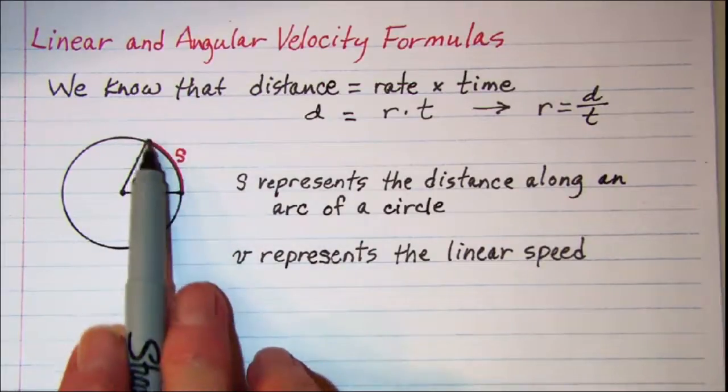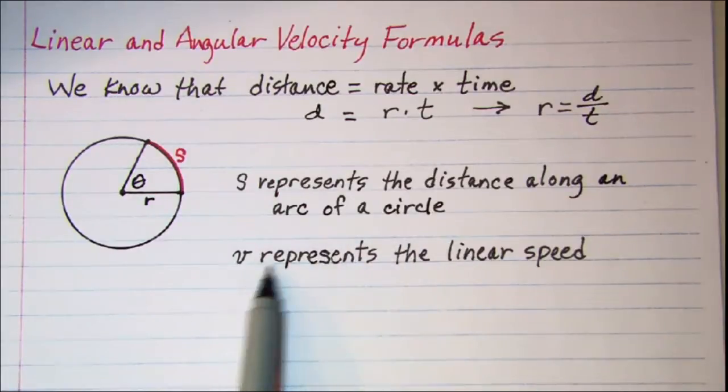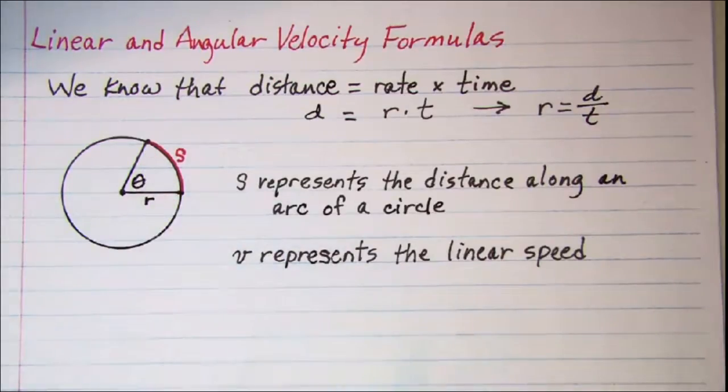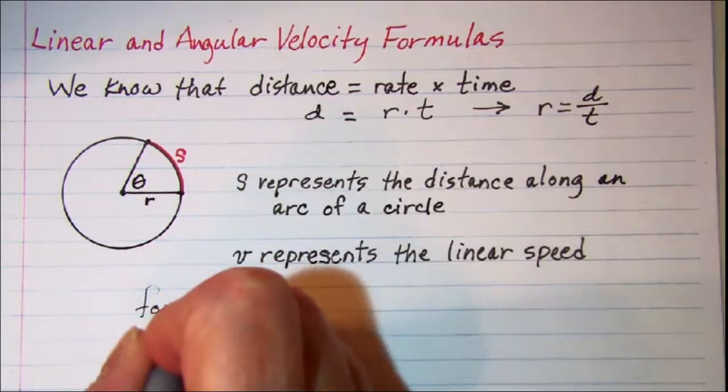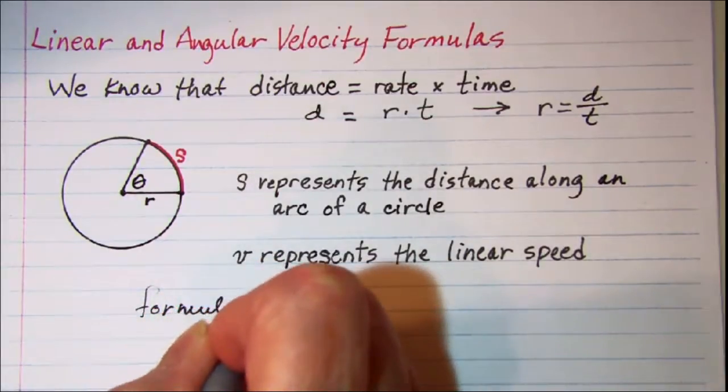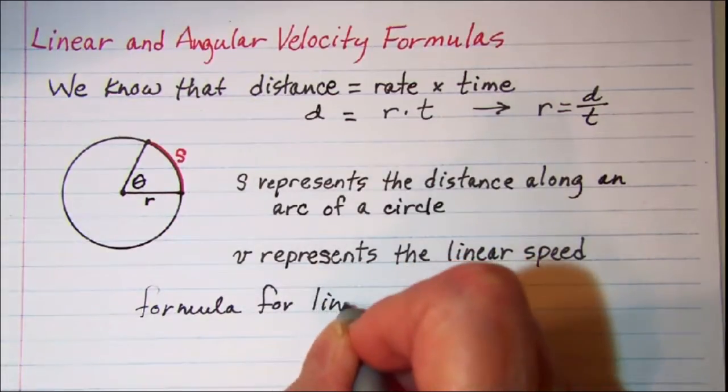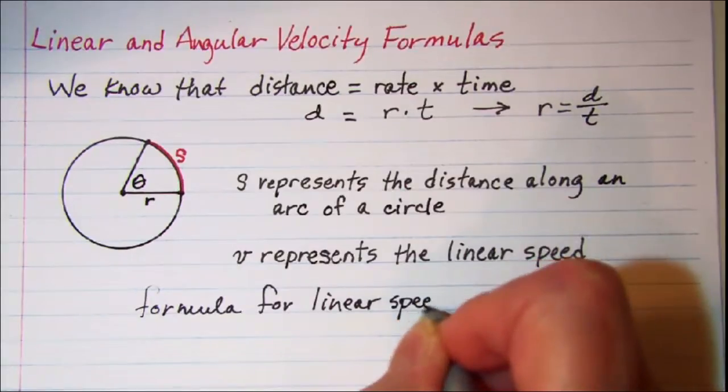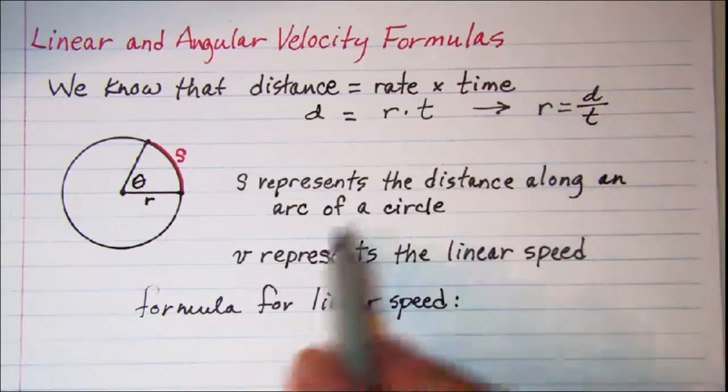So s represents the distance along the arc of a circle. V is going to represent the linear speed of a point on that circle. And so we can get a formula then that the rate of speed, which we are going to let that be v.